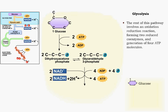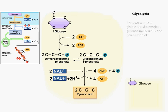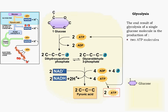In addition, two energy-rich pyruvic acid molecules remain from the single glucose molecule. Glycolysis of a single glucose molecule produces two ATP molecules, two reduced coenzymes, and two pyruvic acid molecules.